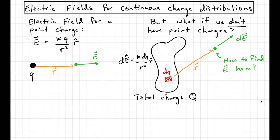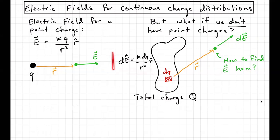Conceptually, we're going to ask how much electric field does each piece contribute. We take another point, ask how much electric field that contributes, and so on. We add up the electric fields contributed by all of those dqs around the object — that's our total electric field. We're calculating dEs and summing them up over the entire object, which means taking an integral. If dE is this expression, then the total electric field is found by integrating over the entire body.